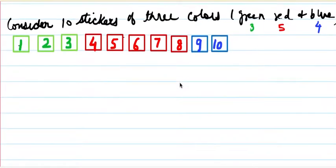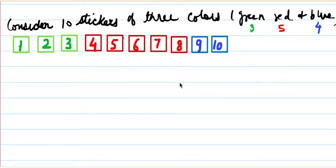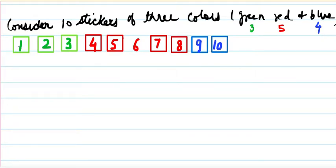Let's start with an example to understand this concept. I'm considering 10 stickers of three colors: stickers 1, 2, 3 are green; stickers 4, 5, 6, 7, 8 are red; and stickers 9 and 10 are blue.